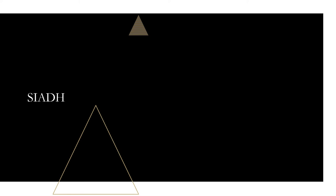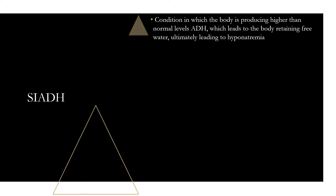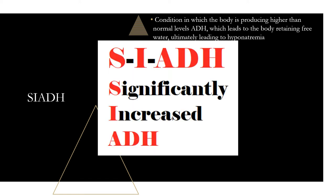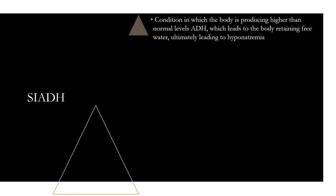SIADH — Syndrome of Inappropriate Antidiuretic Hormone — is a condition where the body produces higher than normal levels of ADH, causing the body to retain free water, ultimately leading to hyponatremia. The body is producing excess ADH, hanging on to all of the fluid, with little coming out in the urine. To remember which condition has excess ADH: SI in SIADH stands for 'significantly increased' ADH.